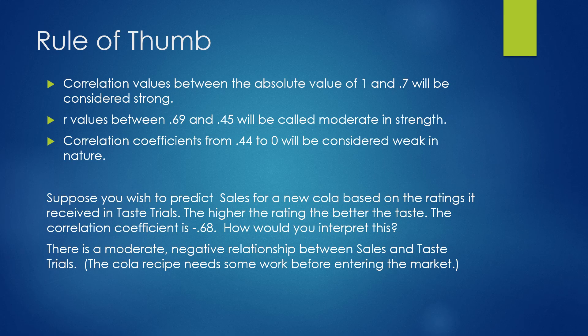Correlation values for a new cola. Suppose you wish to predict sales for a new cola based on the ratings it received in taste trials. The higher the rating, the better the taste. What if the correlation coefficient is negative 0.68? How would you interpret this? So there's a moderate-negative relationship between sales and taste trials. Therefore, the cola recipe probably needs some tweaking before we let it enter the market.